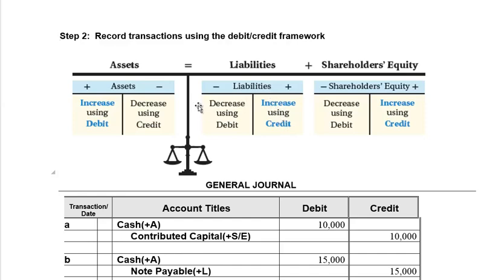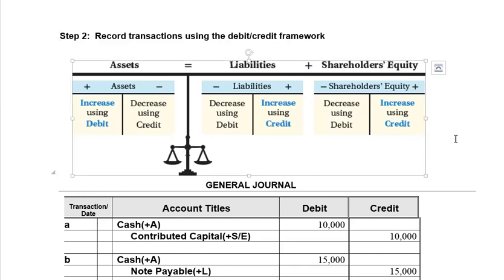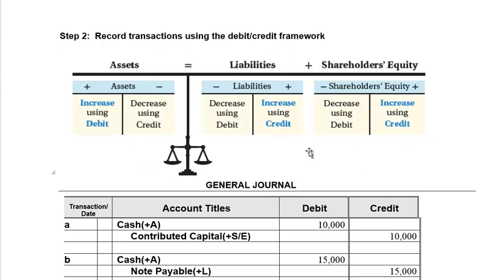Shareholders' equity works the same way. If retained earnings or any shareholders' equity account goes up, it goes up on the right and right means credit. If it goes down, it goes down on the left and left means debit. This helps us see that all the debits and credits on the asset side must equal all the debits and credits on the right-hand side — whatever journal entries we do, the total dollar value of all debits and credits must be equal to keep the balance sheet in balance.